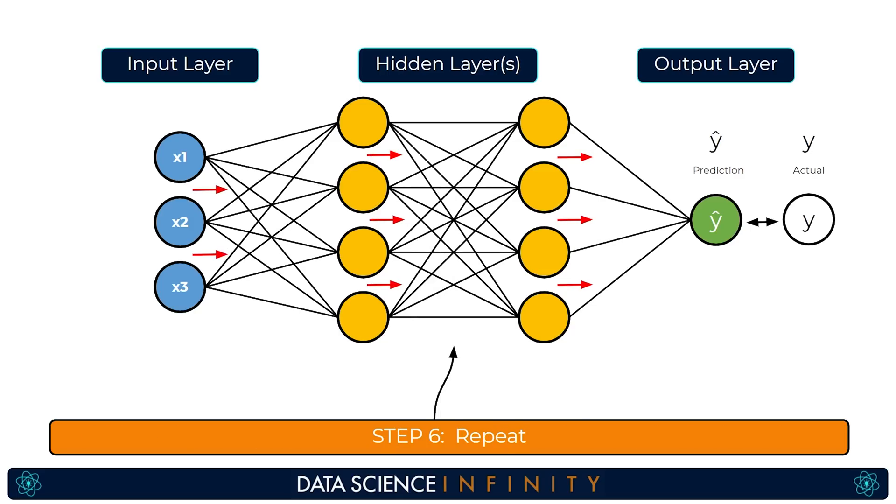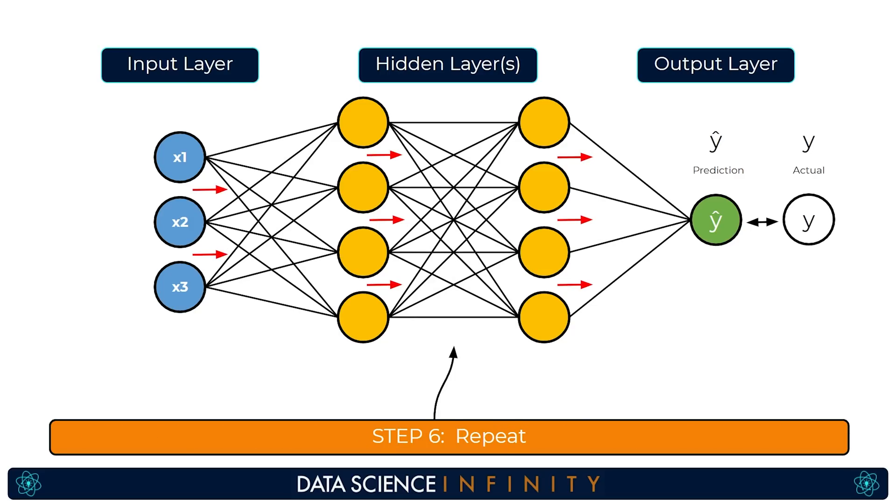We continue to run the same process across all of our data many times and after all of those updates to the weight values we hopefully end up at a point where the network has discovered a really accurate mapping that links our input values to our output values and would allow us to feed new unseen data into the network and get some accurate predictions.